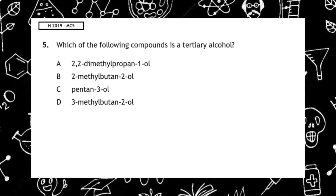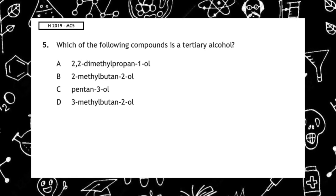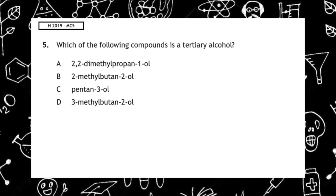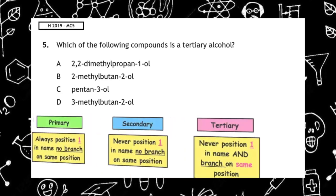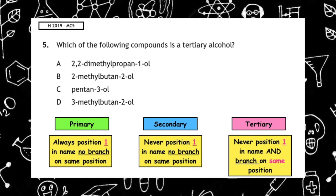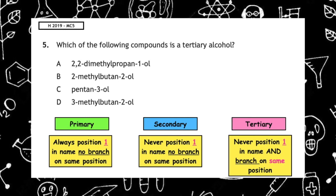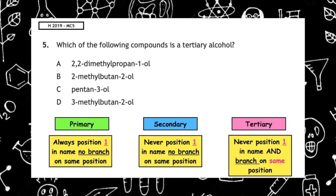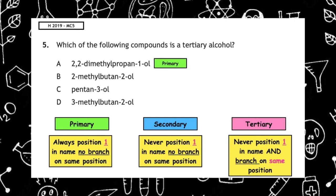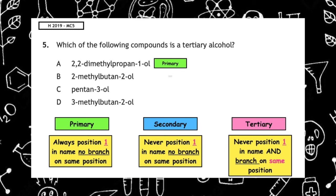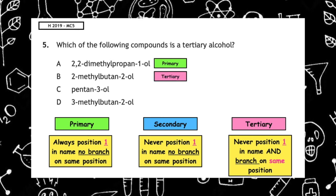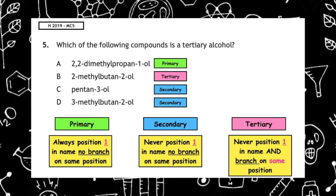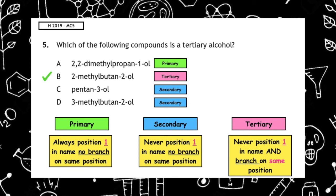This past paper question is from the Higher 2019 multiple choice question 5: which of the following compounds is a tertiary alcohol? We need to remember the shorthand way to identify primary, secondary and tertiary alcohols from their name. We're looking for a tertiary, so we don't want the position of the functional group to be on position one, and the branch has to be on the same position. Looking at option B, we have 2-methylbutan-2-ol, so that would be classed as a tertiary alcohol.